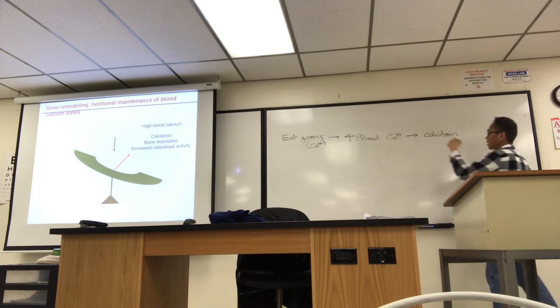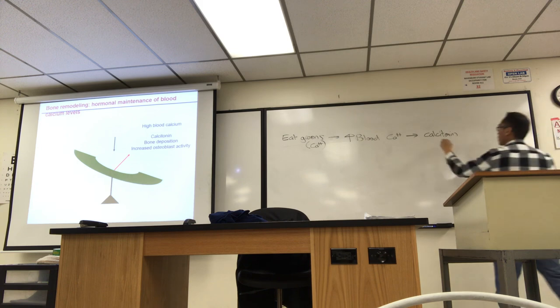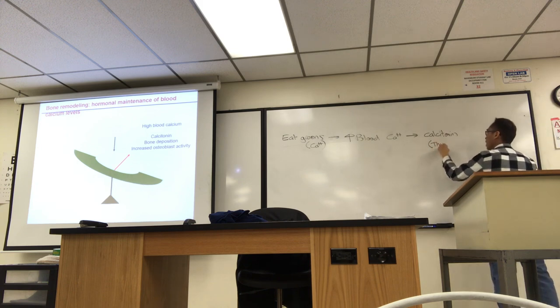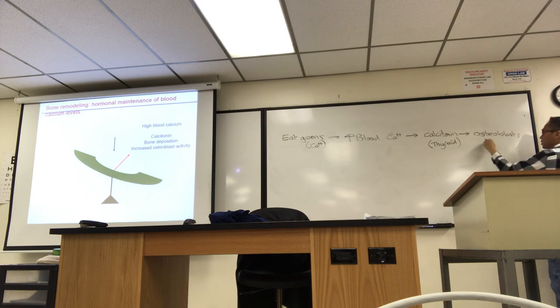So the hormone that brings the blood calcium back to homeostasis is calcitonin. So calcitonin, it comes from a gland in the neck called the thyroid. And what that will do, it will target the osteoblasts to increase their activity.